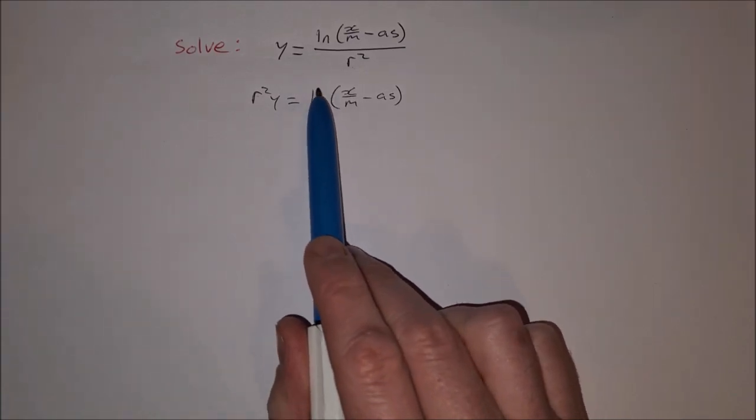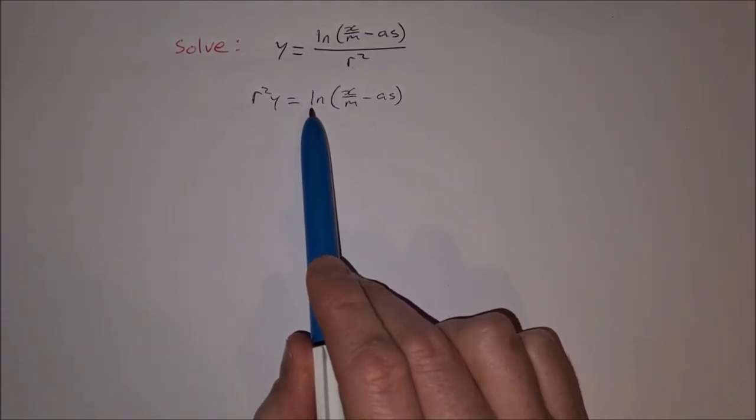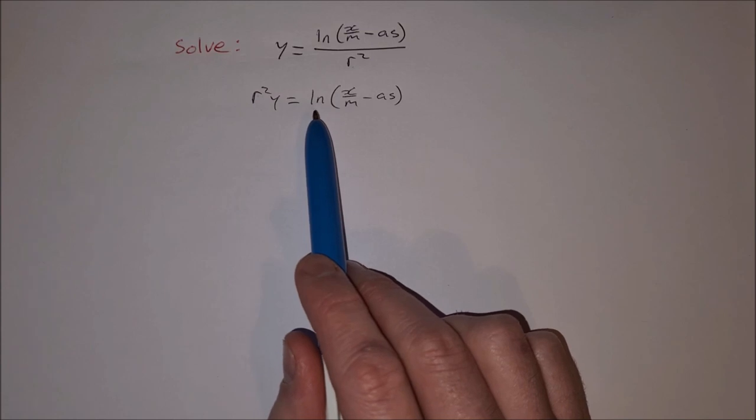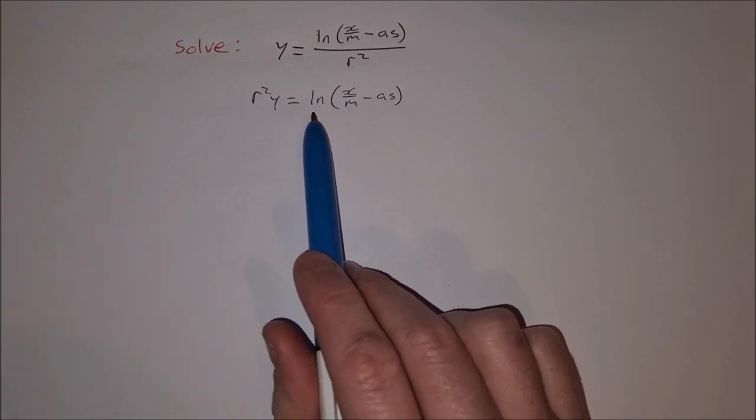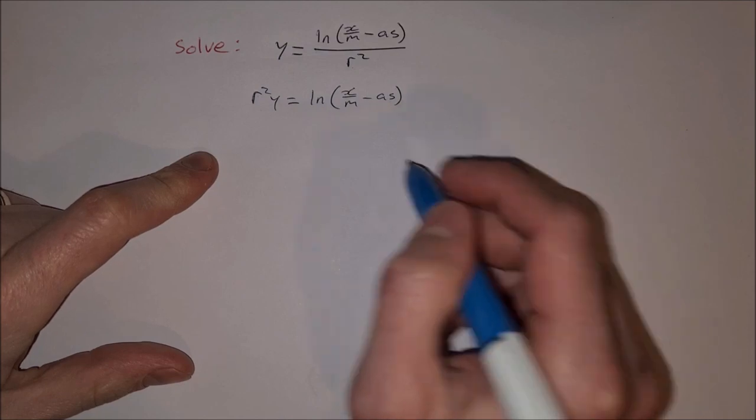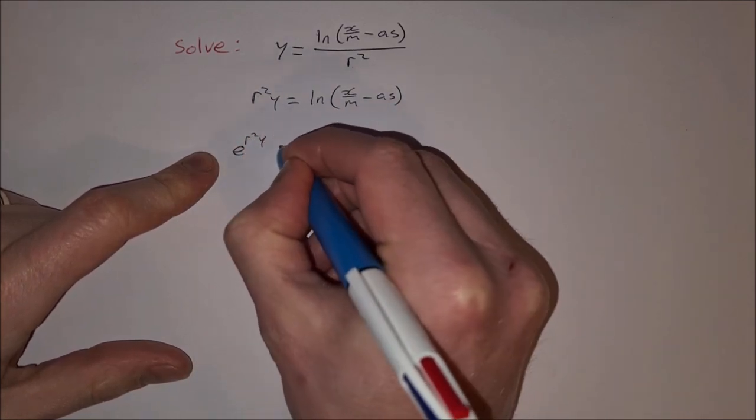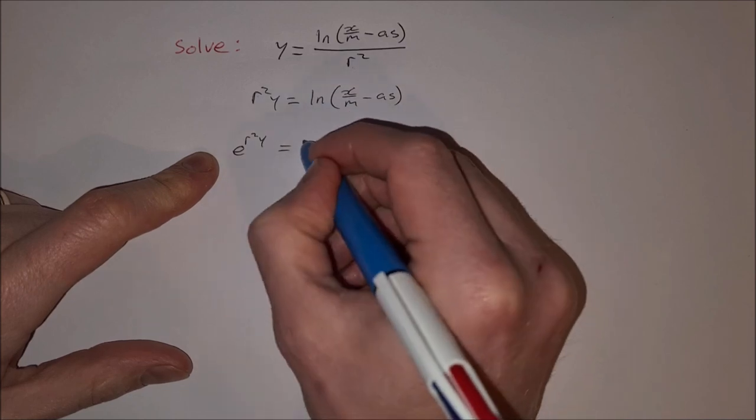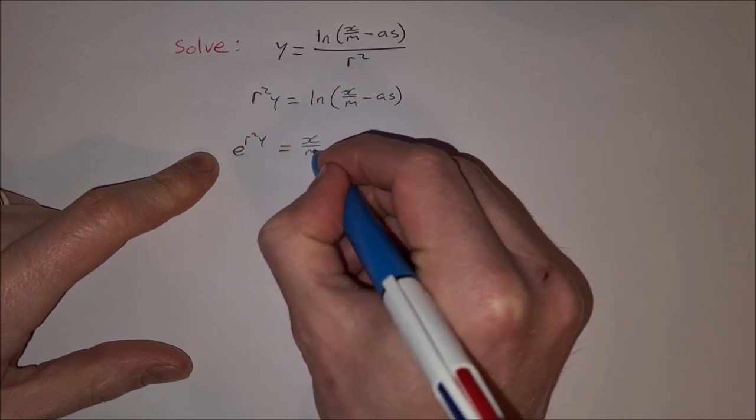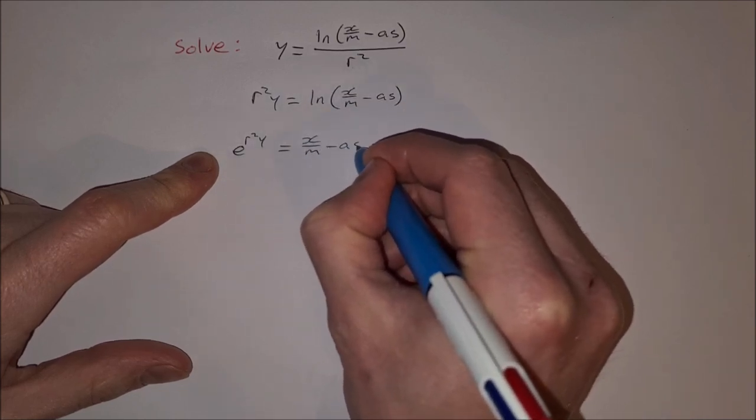Next thing I notice is this natural log. I'd rather have that in exponential form than log form, so I'm going to take e to the power of r squared y and that will be equal to the brackets here, so that's x over m minus a s.